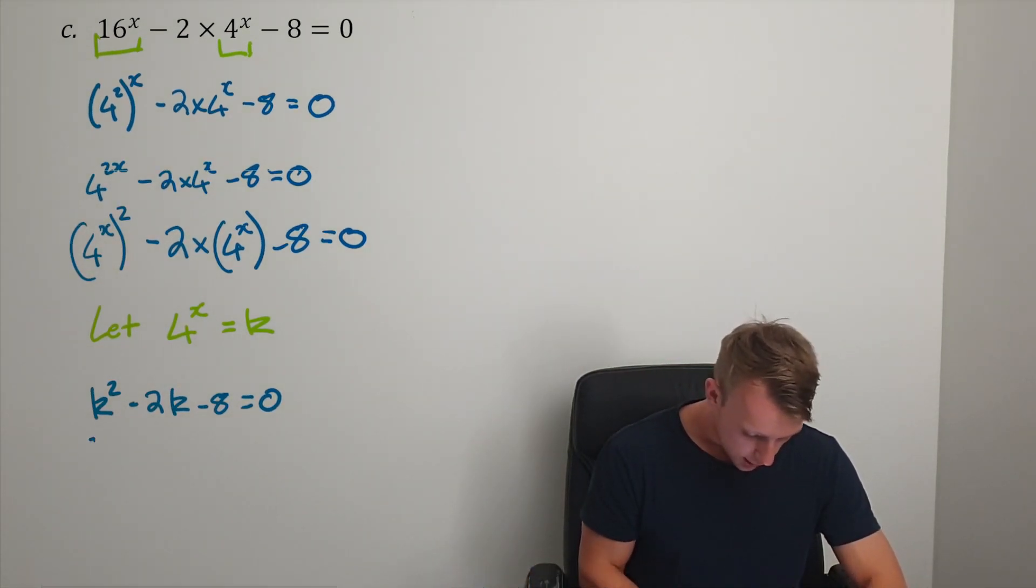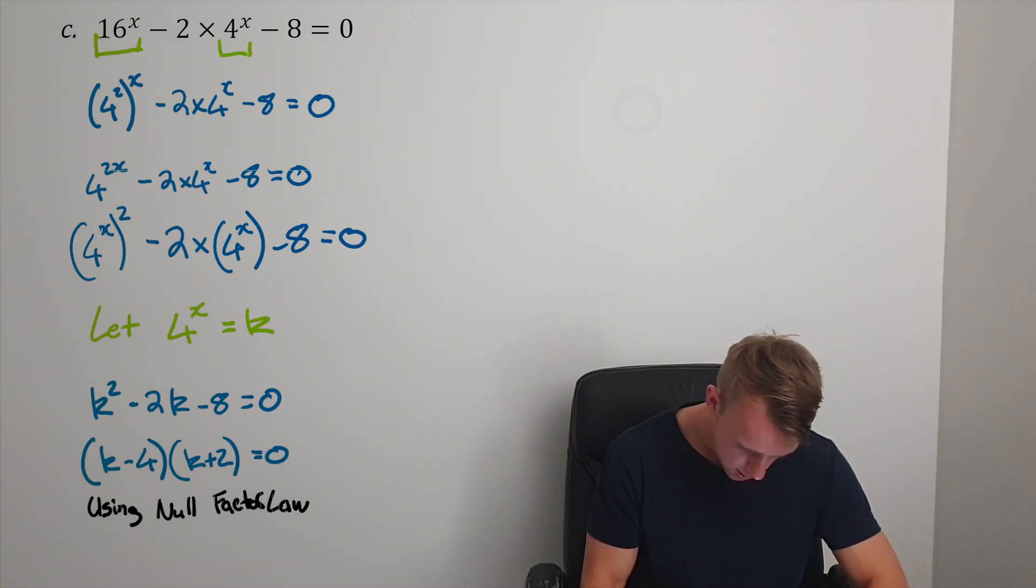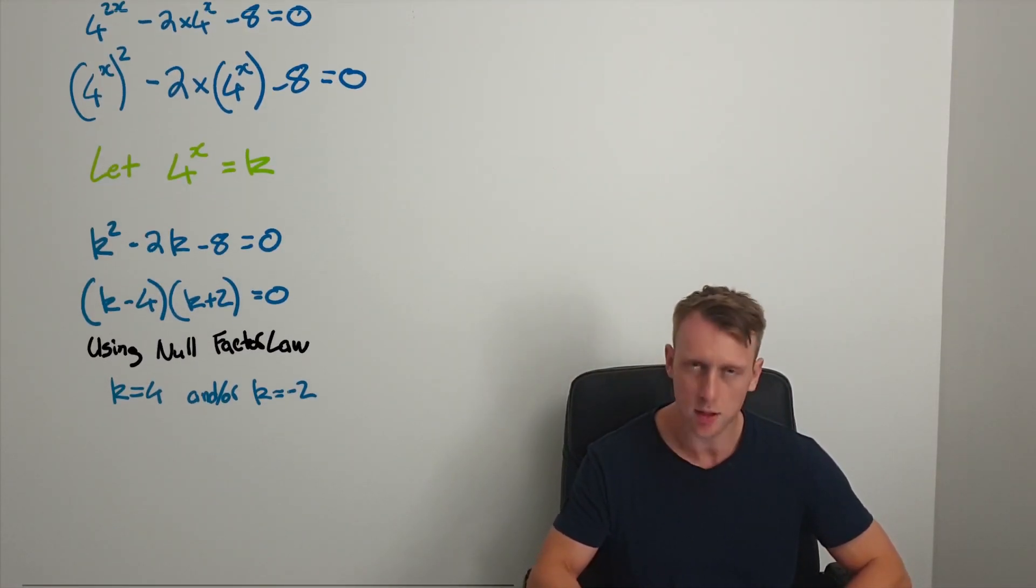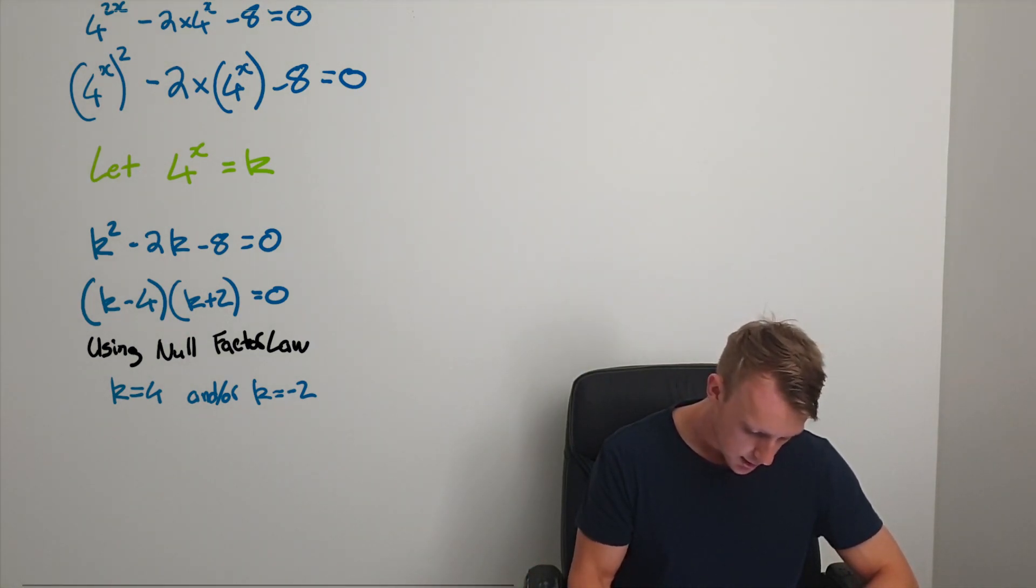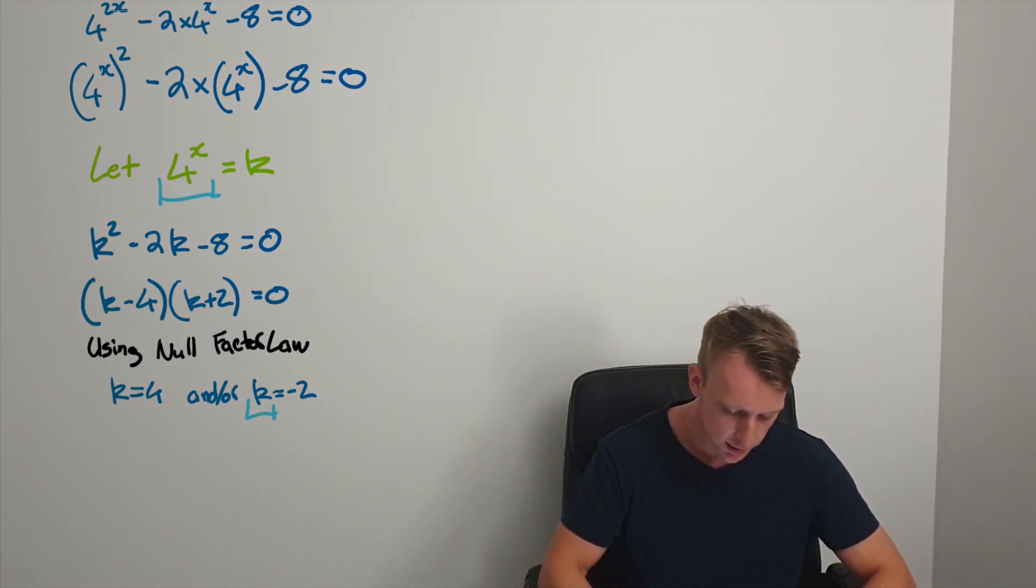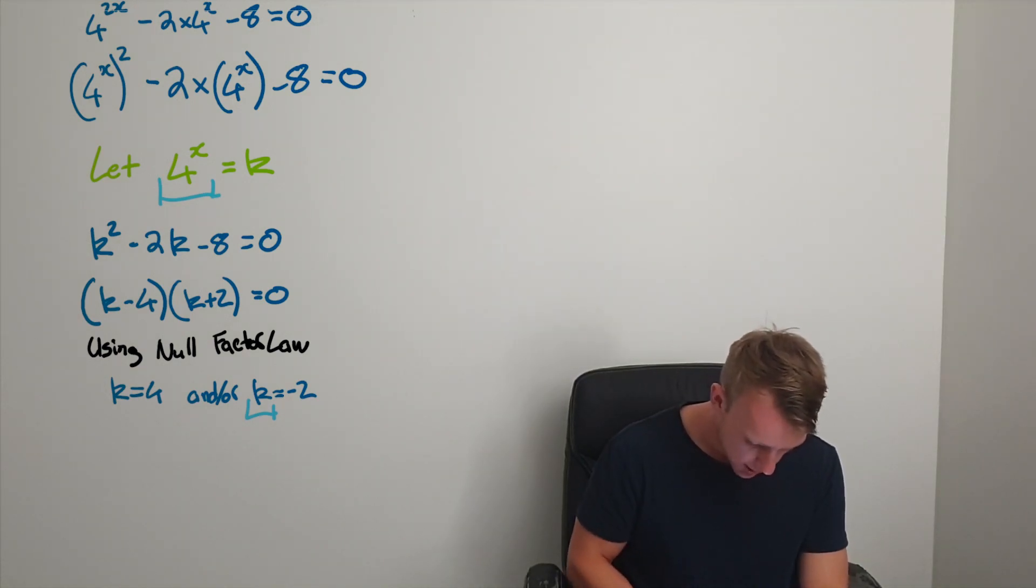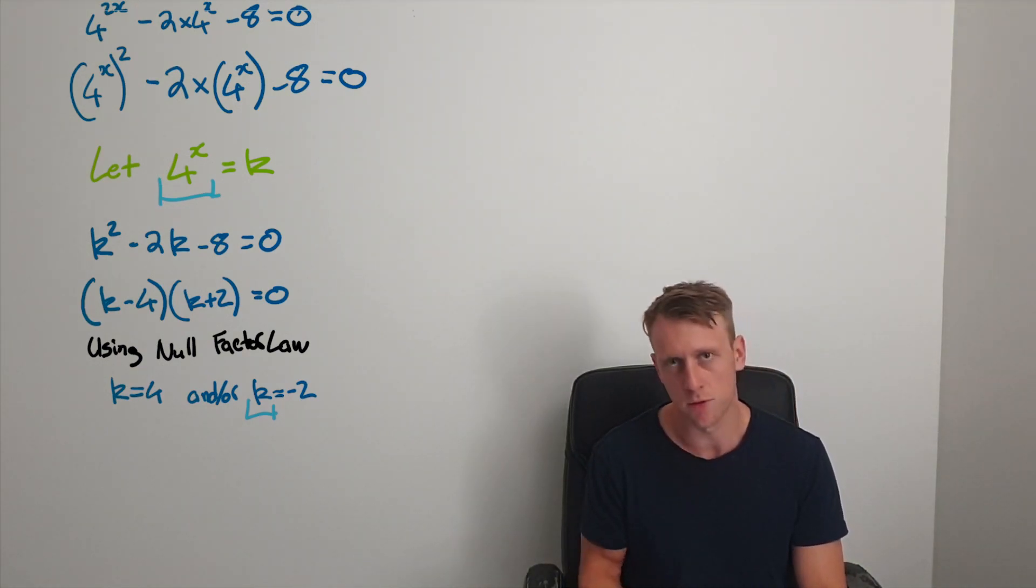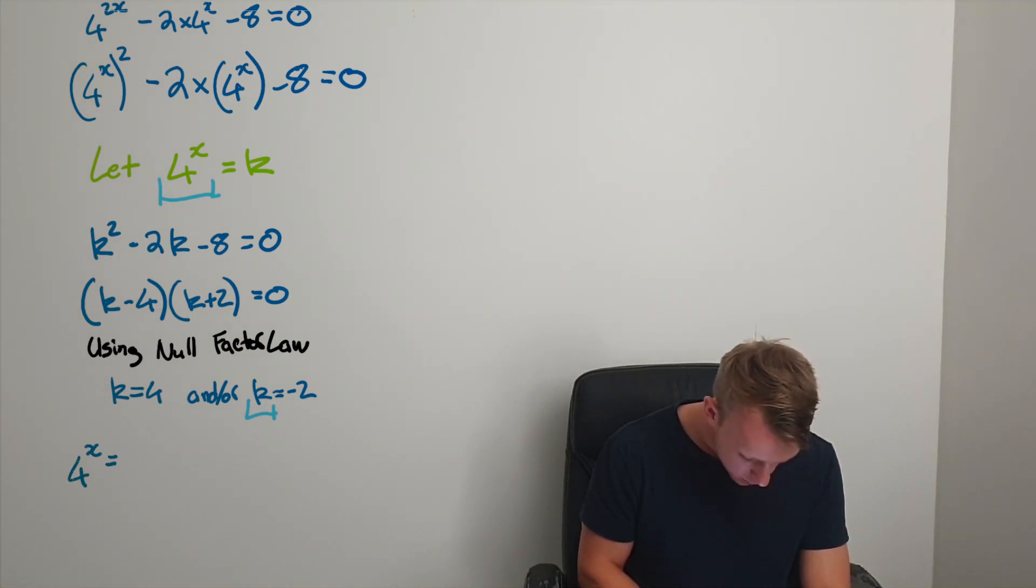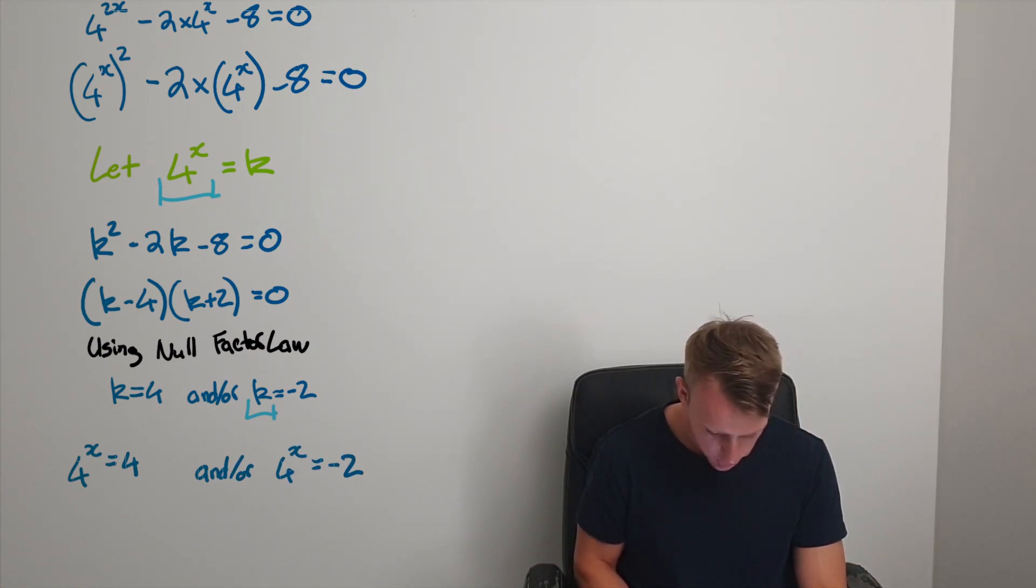We can factorize this quadratic. Using the null factor law, we get k equals 4 or k equals -2. I want to highlight that k is 4^x, so we haven't quite solved for x yet. What this actually means is 4^x = 4 and 4^x = -2.